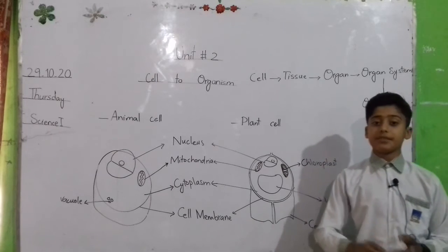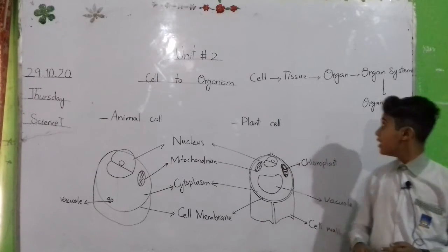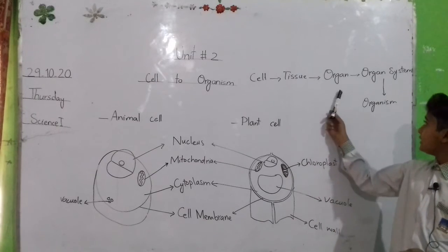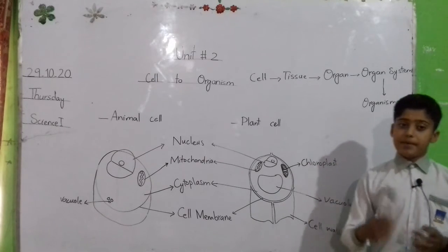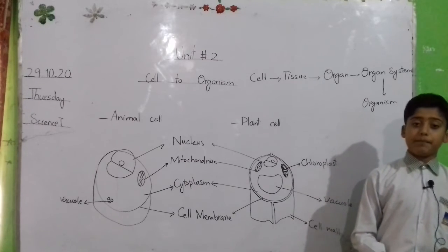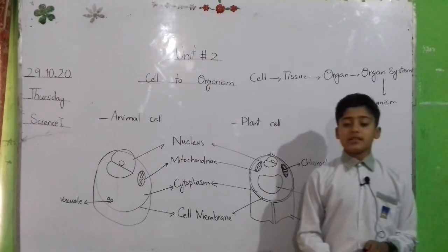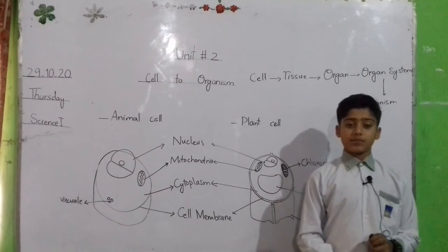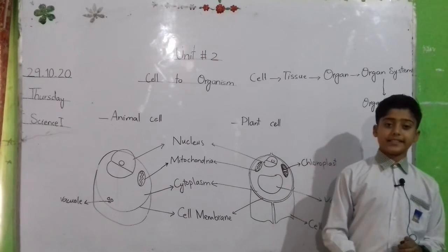Group of organs make an organ system. For example, secretive system, nervous system. Group of organ system make an organism. For example, humans, plants, animals, etc.